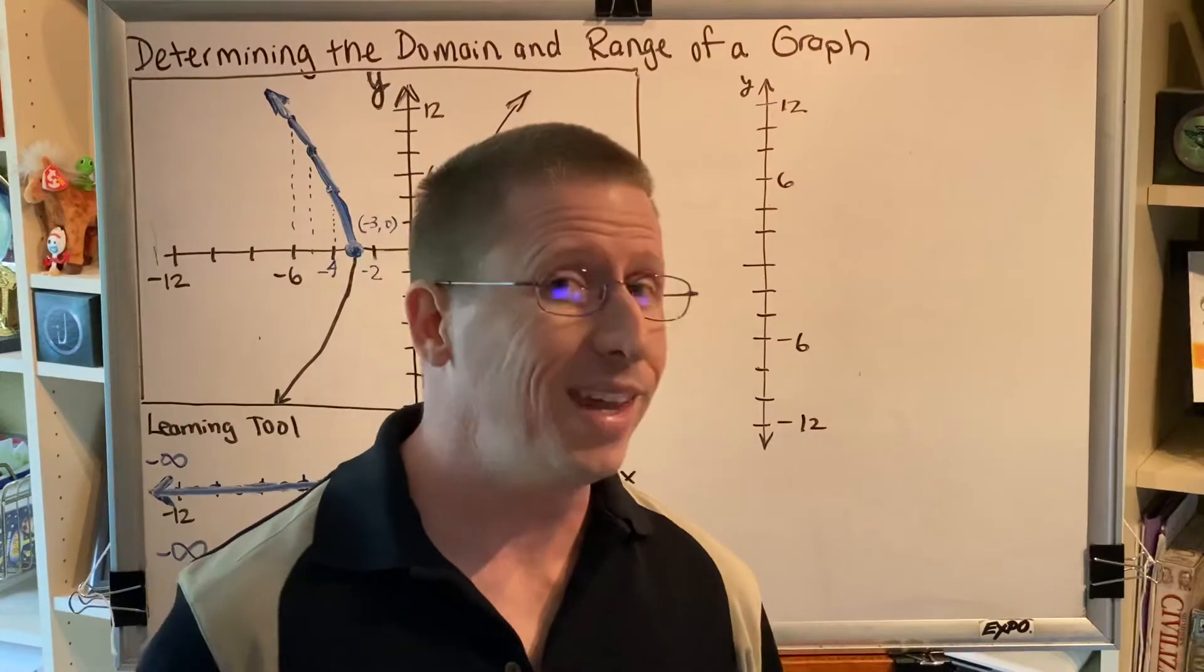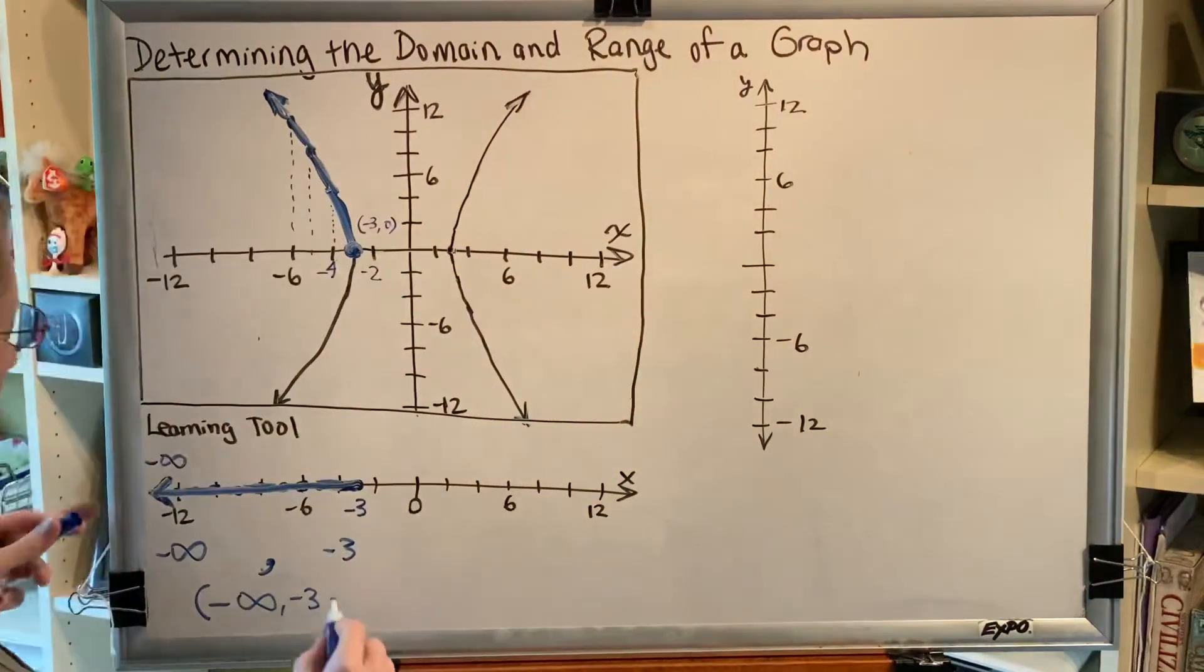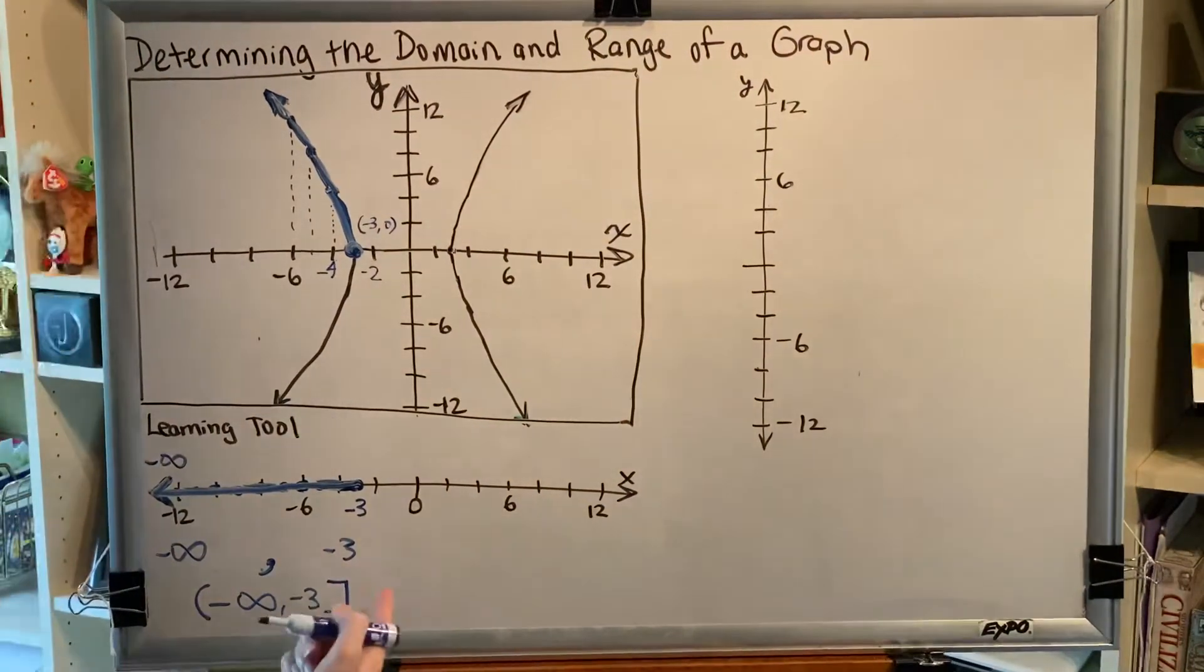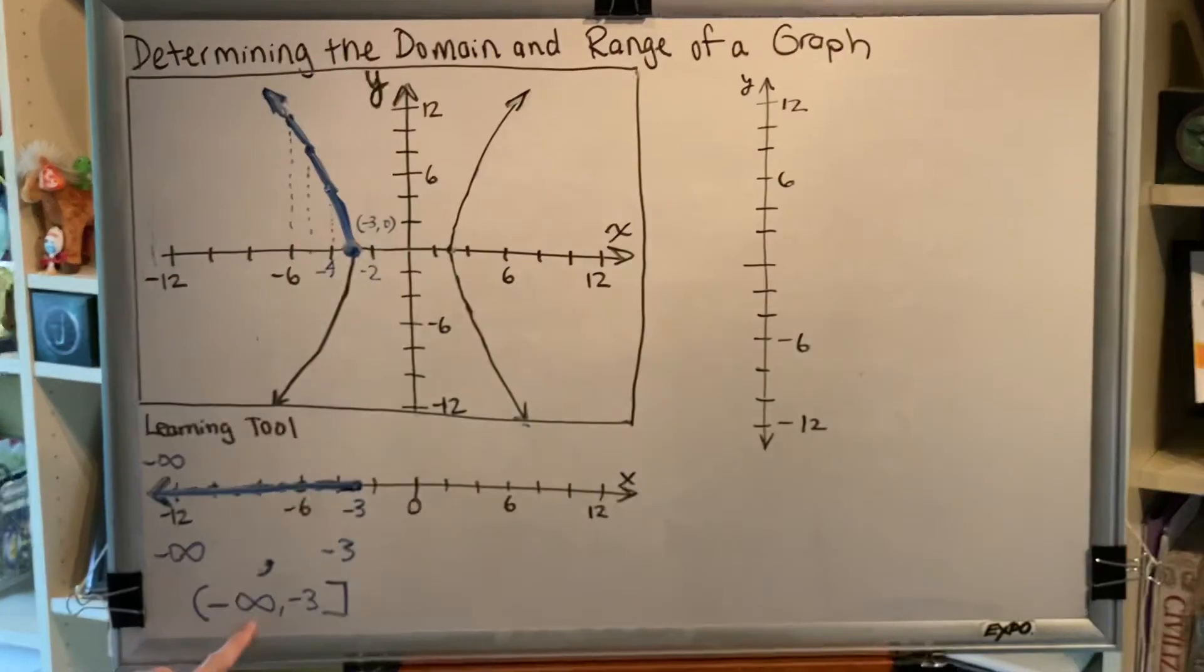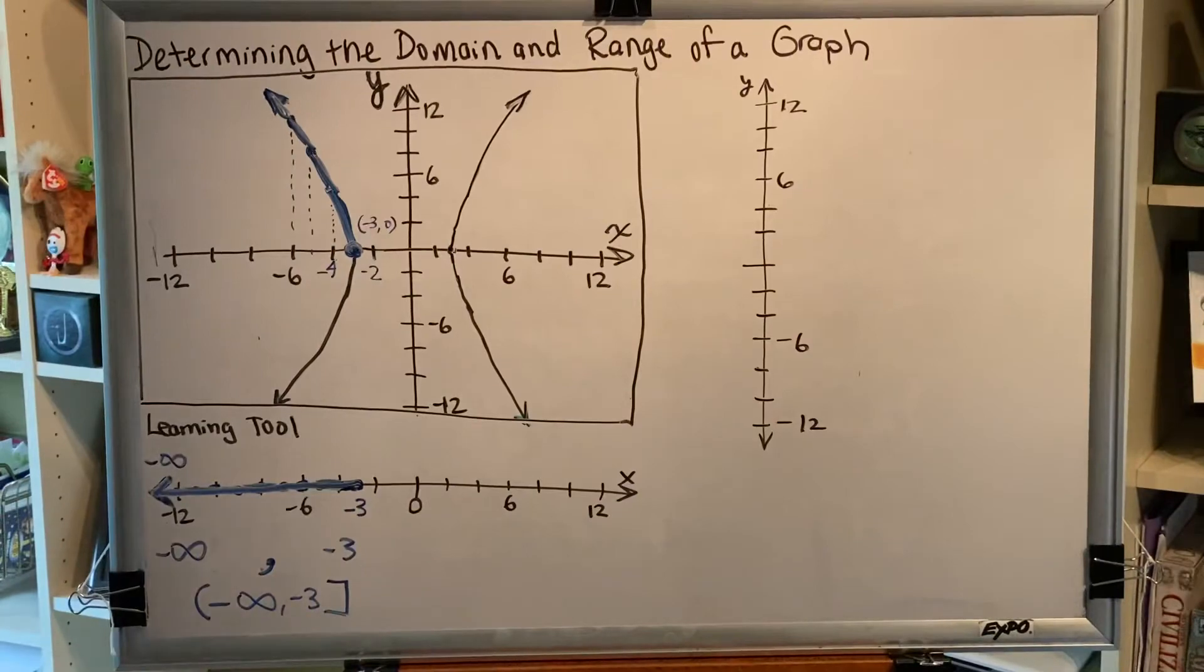So this part of our graph, the left side of our graph, tells us that our domain is from negative infinity to negative 3.